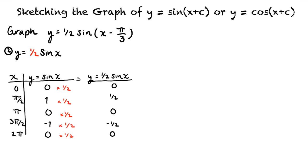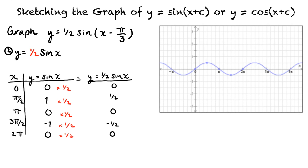And now we will plot these points on a coordinate plane. We can see that this graph looks similar to the graph of y equals sine of x, but it has been shrunk vertically.